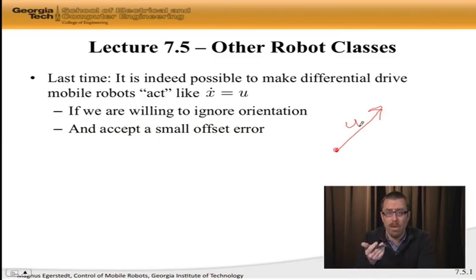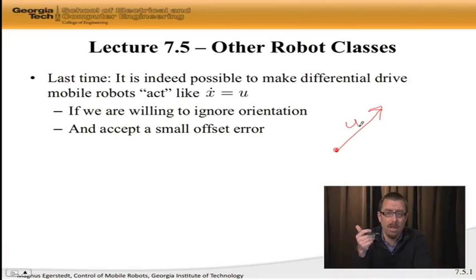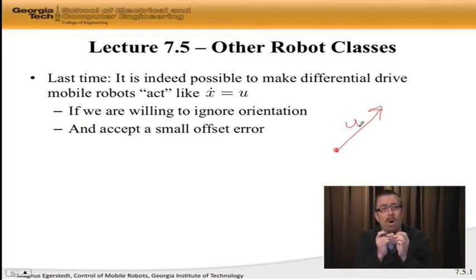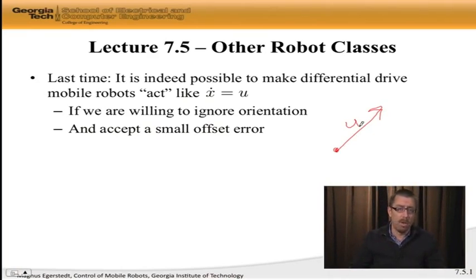We did it in two ways. First, we saw that we can use some kind of tracking controller to follow this, but then, in last lecture, we came up with a rather clever transformation that allowed us to actually track this u vector more or less perfectly. The question one should ask then, of course, is does this apply to other types of robots?